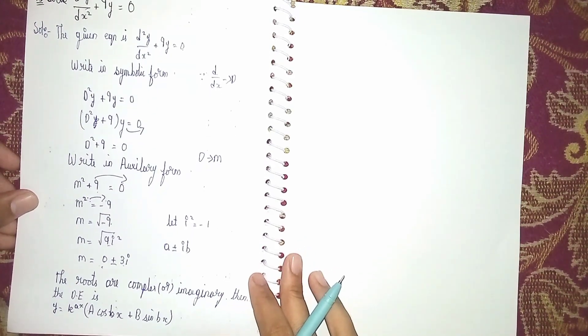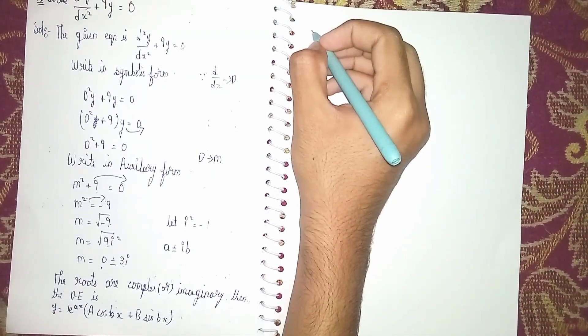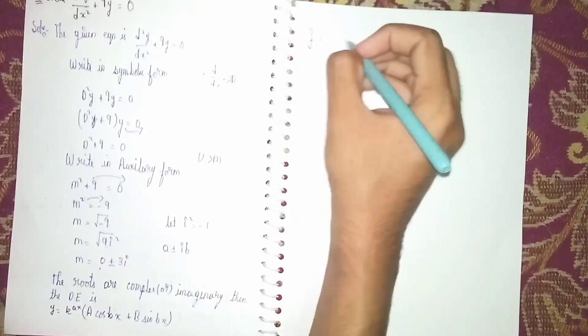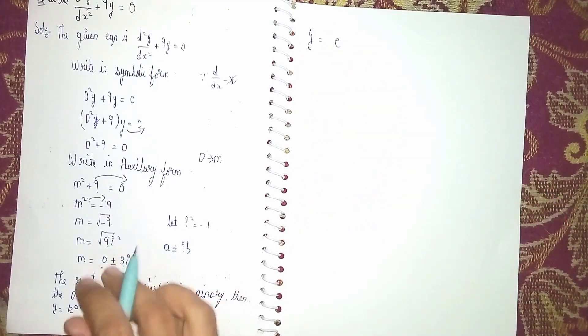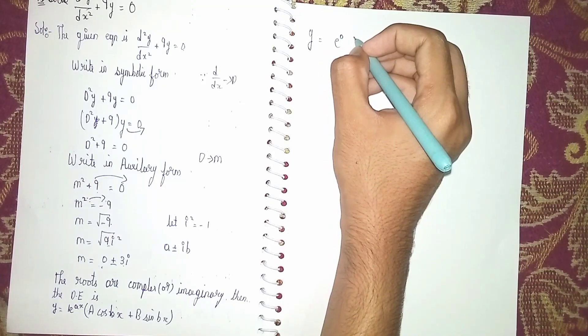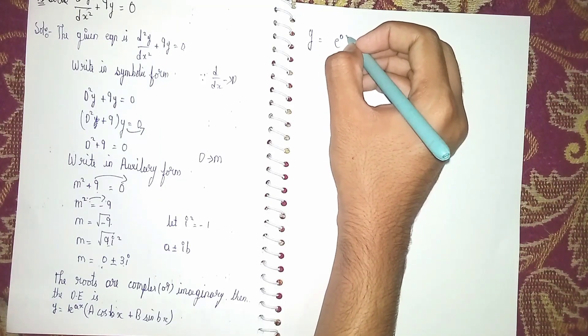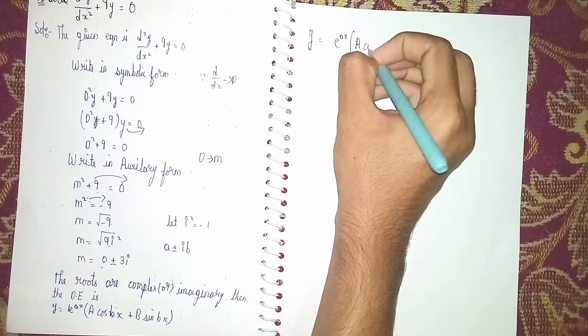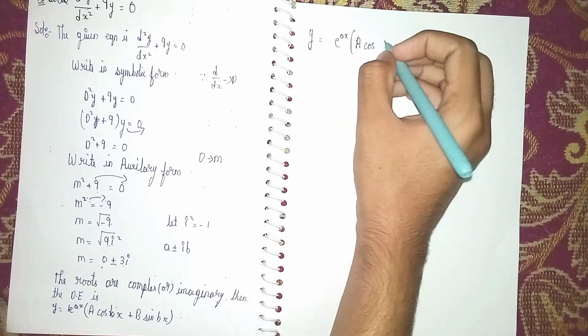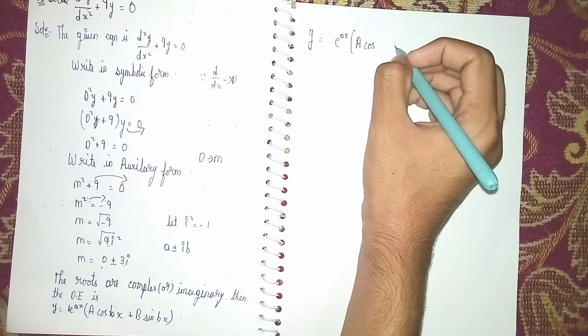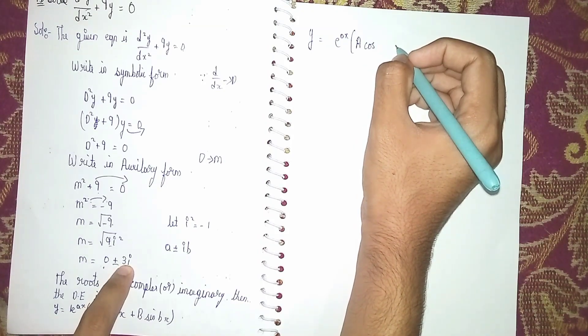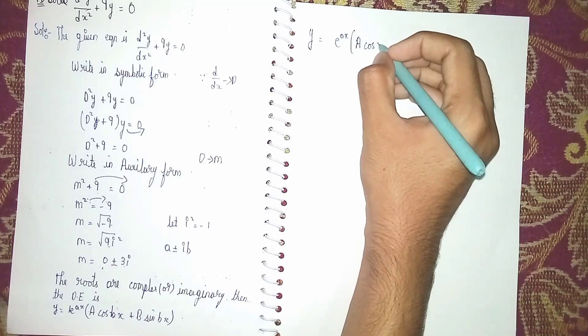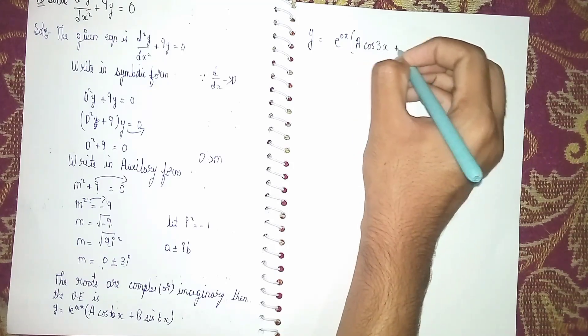So y = e^(0·x) × [a·cos(bx) + b·sin(bx)]. What is a? a is 0. What is b? b is 3. So 3x, plus b into sine 3x.